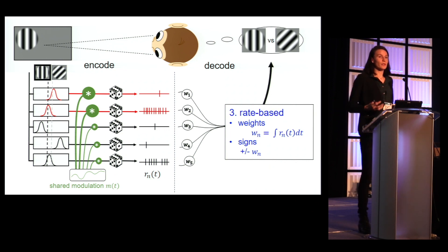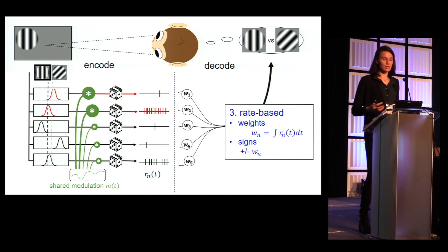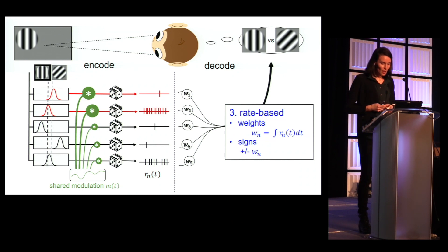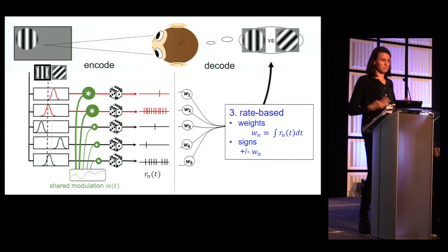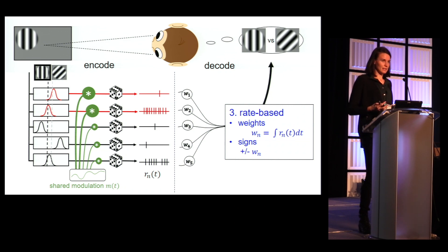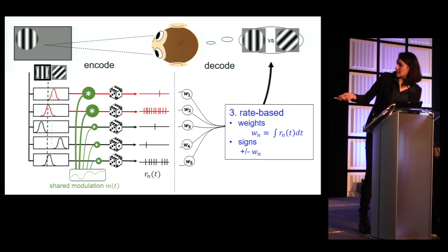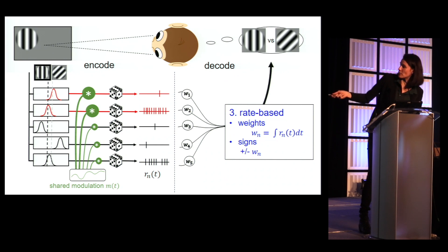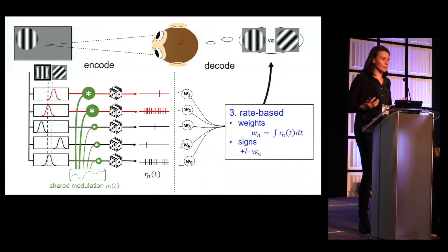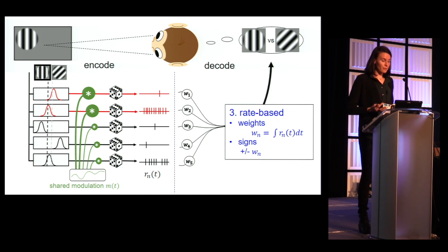Finally, we want to test whether knowledge of the modulation is even necessary. An even simpler approach would be to assign high readout weights to those neurons which are strongly active. This would not require any knowledge about the modulation — we just have to see the responses and say those neurons are very active, so we'll listen to those. It could work because informative neurons will necessarily increase their activity at some point, while neurons with response functions completely out of range will have low activity. However, it might be problematic for a neuron that responds a lot to both stimuli, getting a high readout weight. We will compare such a rate-based decoder that takes readout weights proportional to the mean response rate.